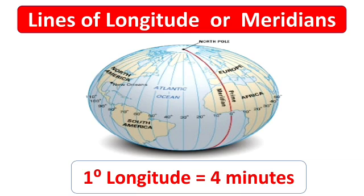Most importantly, 1 degree of longitude is equal to 4 minutes, where minutes is the unit of time. So we can calculate the time of different places with the help of longitudes.